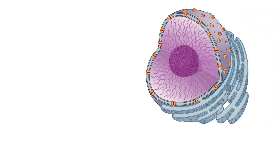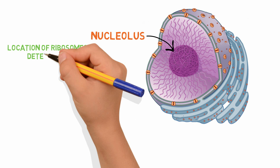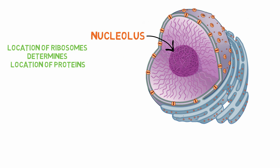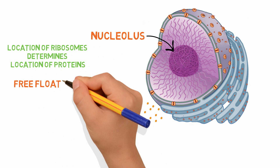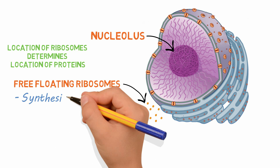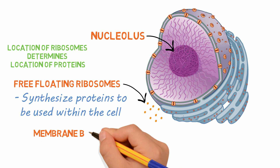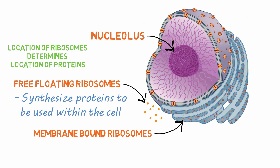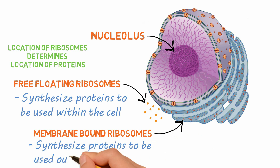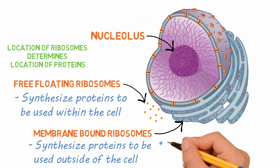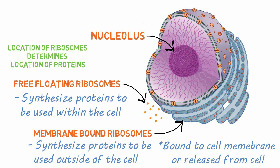In eukaryotic cells, ribosomes are synthesized in the nucleolus of the nucleus. The location of ribosomes in the cell determines where the proteins they make end up. Ribosomes freely floating in the cytoplasm synthesize proteins to be used within the cell, while ribosomes bound to the rough endoplasmic reticulum synthesize proteins that will end up outside the cell, either bound to the cell membrane or released as a signaling protein, for example.